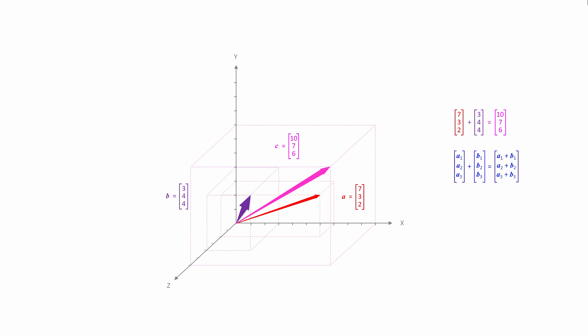Indeed, the same applies with vectors that have more than three dimensions. We can't easily visualize more than three dimensions with simple geometry, but the sums are just as simple, and we can express it algebraically like this, where n is the number of dimensions.